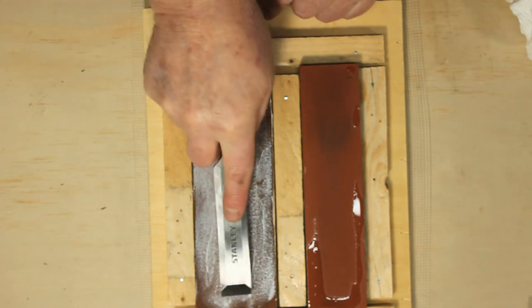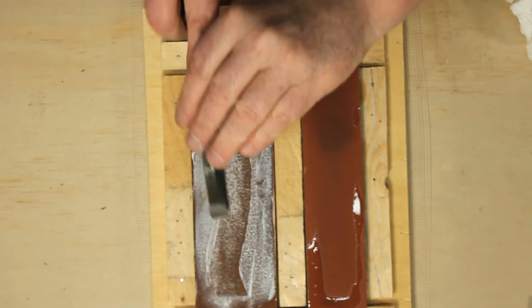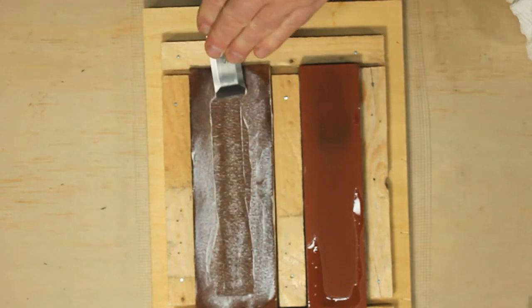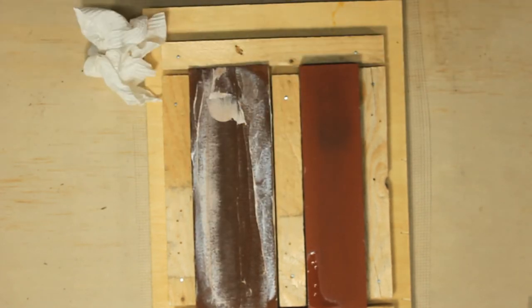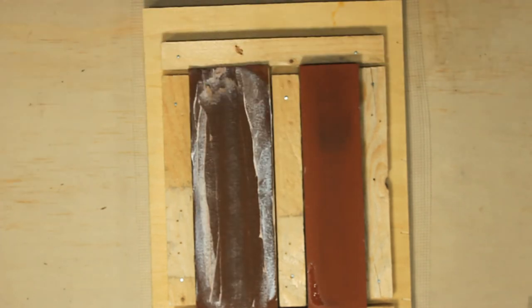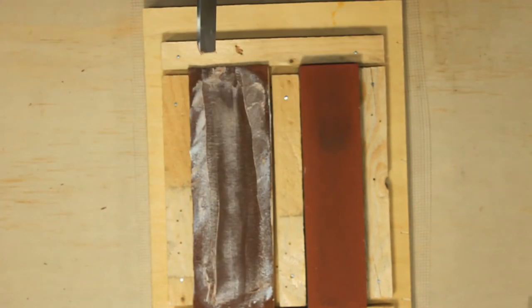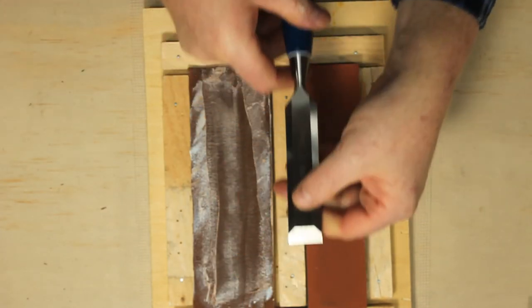Next lay the flat side of the chisel on the strop and draw it back towards you while applying a little pressure. This will bend the wire edge back the other way. Turn the chisel over and repeat the stropping process several times until you can't feel the wire edge on either side of the chisel.